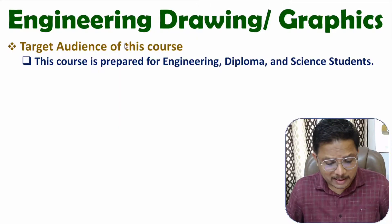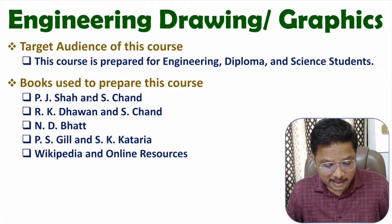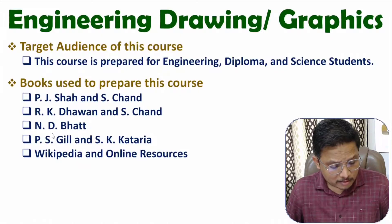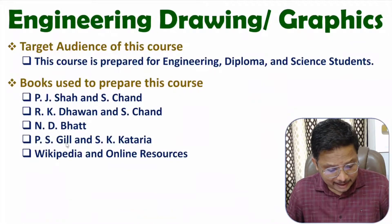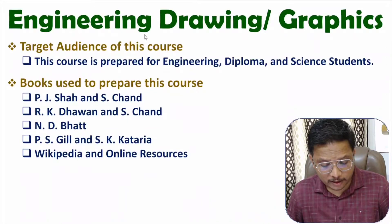To prepare this course on engineering drawing, I have used four interesting books. The first book is of P.J. Shah and S. Chand. The second book is of R.K. Davan and S. Chand. The third book is of N.D. Bhatt. The fourth book is of P.S. Gill and S.K. Kataria. Along with these books, I have used Wikipedia and online resources to prepare this course on engineering drawing.